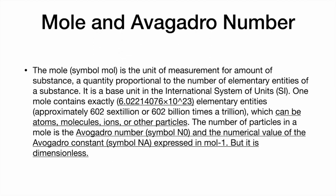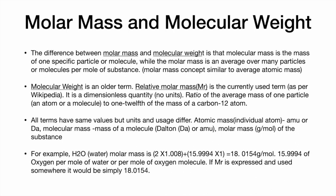The numerical value of the Avogadro constant expressed per mole is dimensionless — it has no mass, length, or time dimension. The mole doesn't come under any sort of measurable dimension; it is just an expression. Molar mass and molecular weight differ in that molecular mass is the mass of one specific particular molecule, while molar mass is an average over many particles or molecules per mole of a substance. The molar mass concept is similar to average atomic mass.